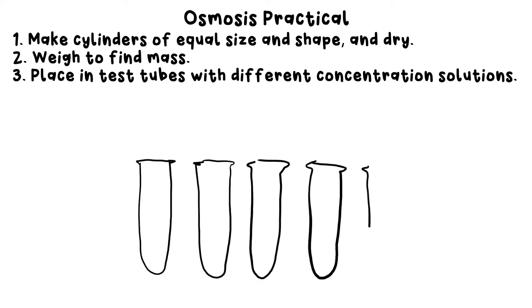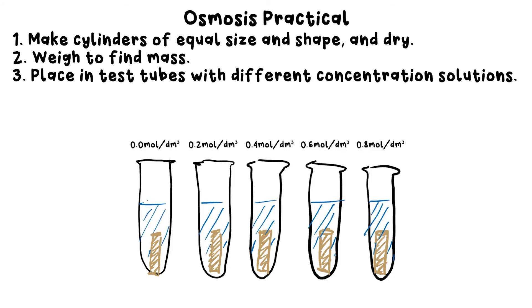Step 3: Place the cylinders in different concentration solutions of glucose or something else. Say, 0 moles per decimetre cubed—that's just distilled water—going up in 0.2s all the way to 0.8 moles per decimetre cubed, let's say. Leave them for a fair amount of time, a few hours to, say, a day.